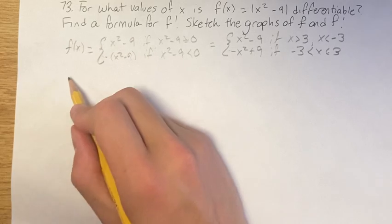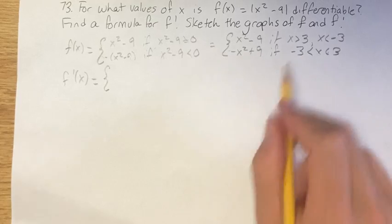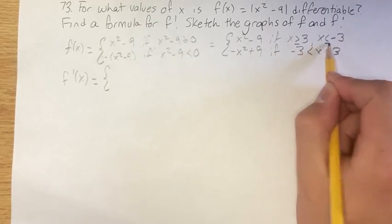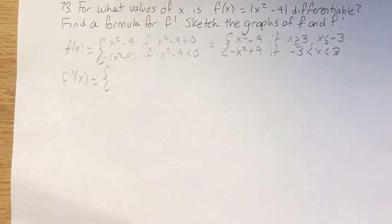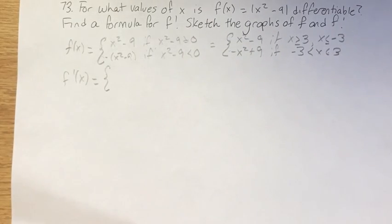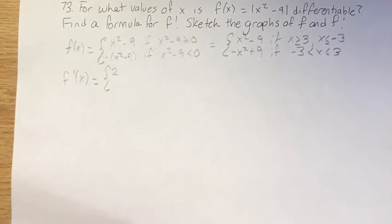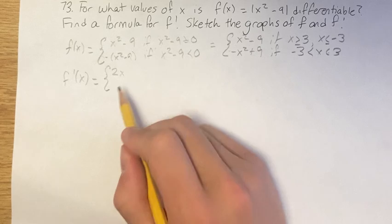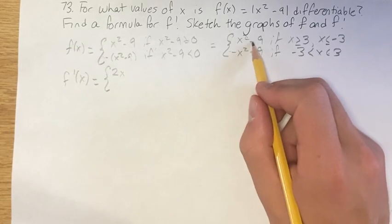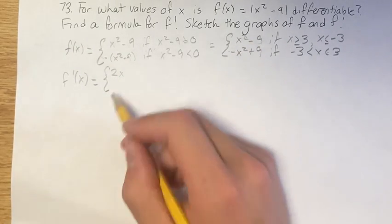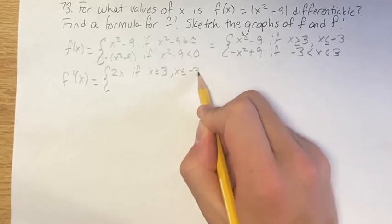Finding a formula for the derivative is just finding the derivative of each piece of the piecewise function, and it's going to have the same domain. Make sure those are equal signs because it's when the thing inside the absolute value is greater than or equal to zero. Finding the derivative of x squared minus 9: we have a power function, so we bring down the exponent as a coefficient, and the new exponent is the old one minus 1, giving us 2x. The derivative of 9 is 0, so it's just 2x if x is greater than or equal to 3 or x is less than or equal to negative 3.